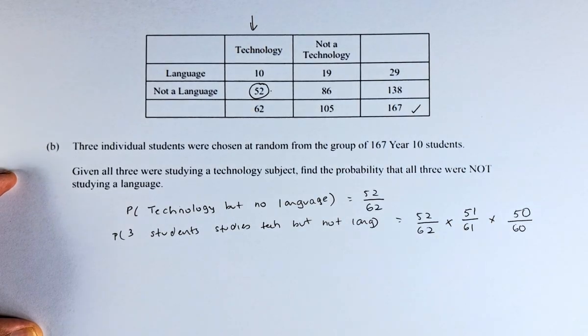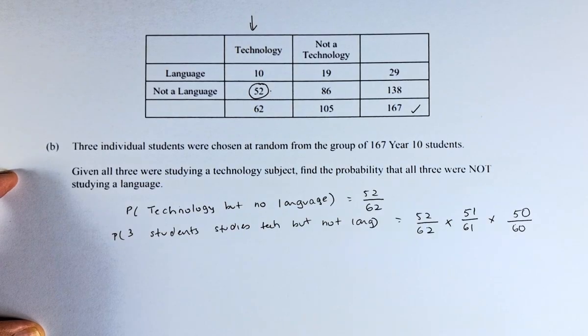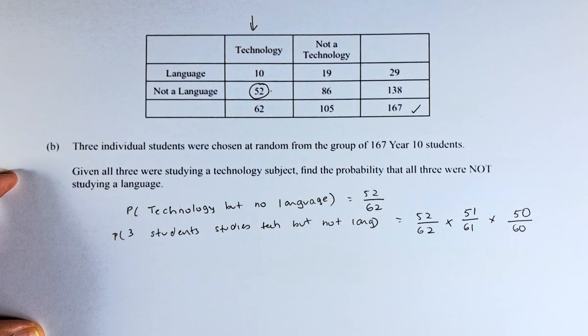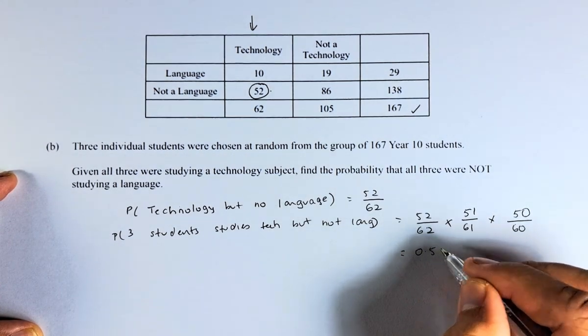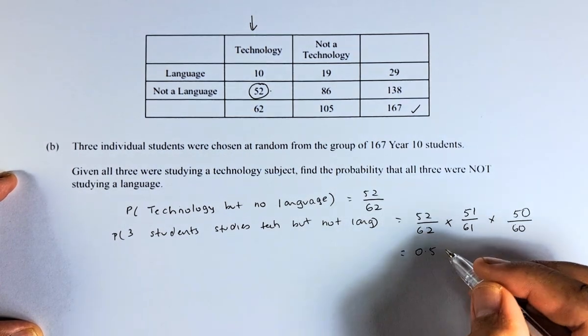So you are going to take 52 over 62 times 51 over 61, and then you multiply by 50 over 60. And you put in your calculator and the answer is 0.584.